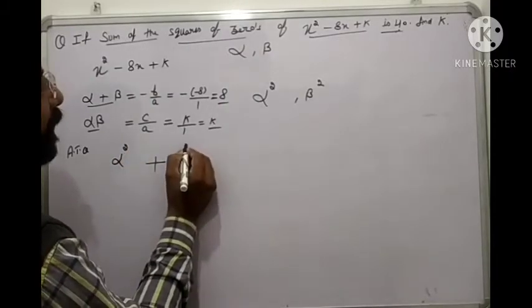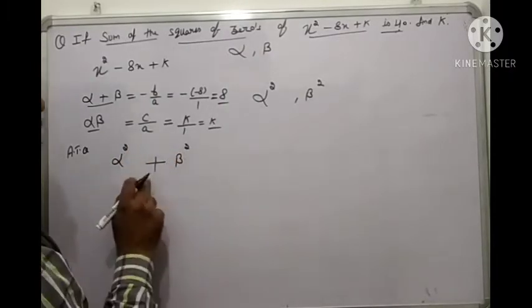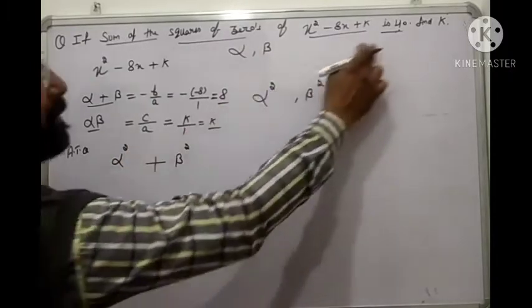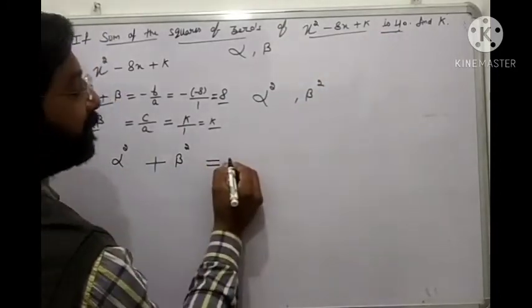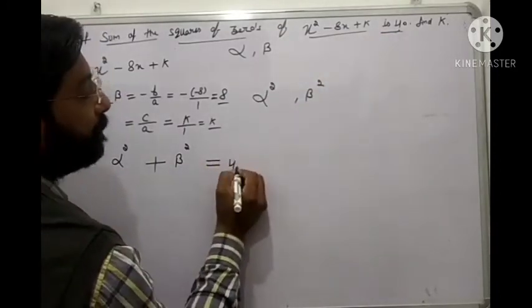The zeros are alpha and beta. We need alpha squared plus beta squared, and their sum is 40.